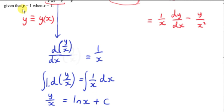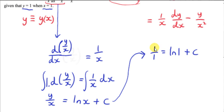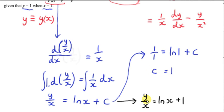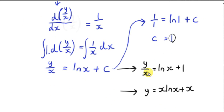Now we go to our boundary conditions. We're given that y is 1 when x is 1. Plugging 1 in for y and 1 in for x: ln(1) is zero, so we get that c equals 1. Now we can write down our particular solution. Plugging 1 in for c, we get y/x = ln(x) + 1. Multiplying both sides by x gives y = x·ln(x) + x.